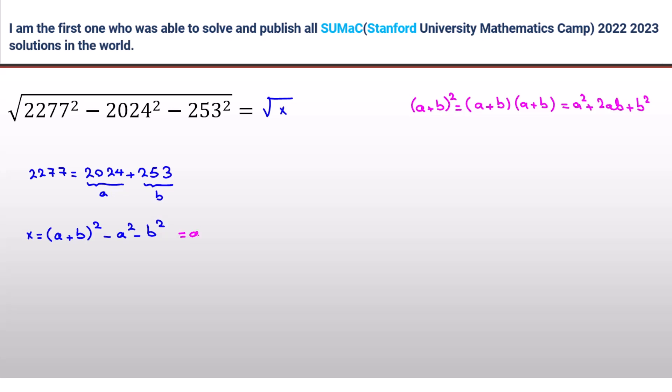So if you apply this here, a squared plus 2ab plus b squared minus a squared minus b squared. These two a squared will cancel each other out, also these two b squared. And it will be 2ab. 2ab is 2 times 2024, because a is 2024 and b is 253.